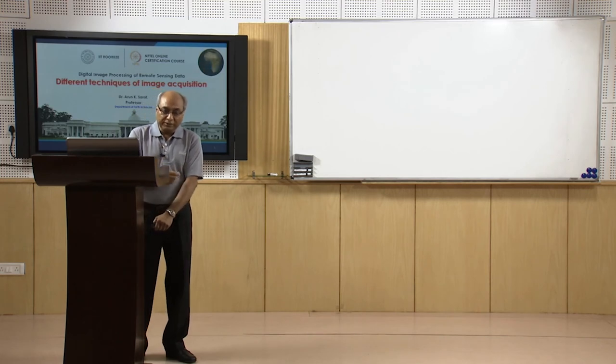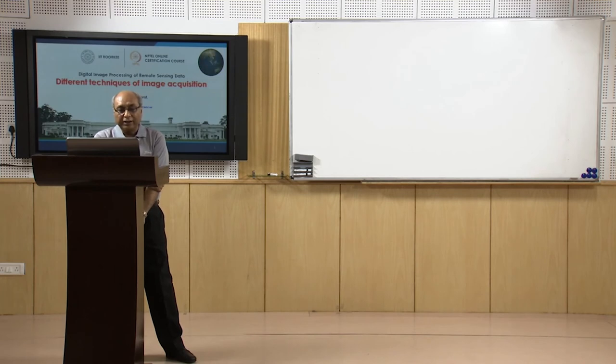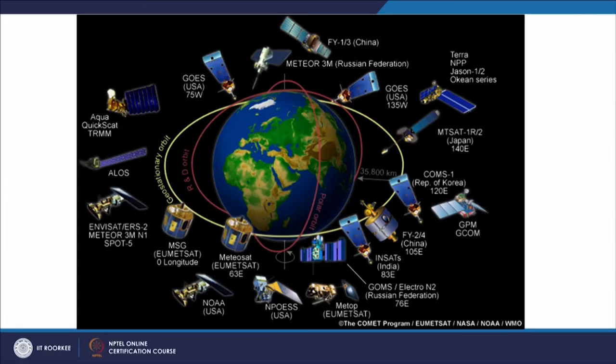The orbit closest to the earth is the sun-synchronous satellite orbit. Examples from India include the IRS series, Cartosat, and Oceansat — all polar orbiting or sun-synchronous satellites. Landsat is an example of a polar orbiting or near-polar orbiting satellite, as are SPOT and NOAA AVHRR. These are the satellites most commonly used for remote sensing data acquisition. Because they are closest to earth, they provide very high spatial resolution.